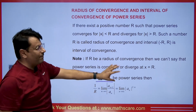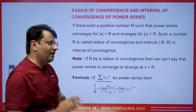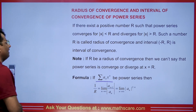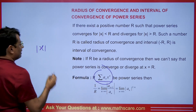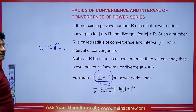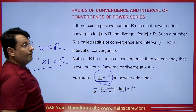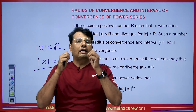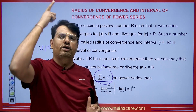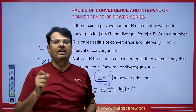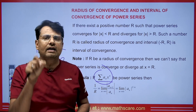Suppose we have a power series and we are getting its radius as R. This shows that the series will be convergent if |x| < R, and it will be divergent if |x| > R. But at |x| = R, we must check by substituting the value to find out if that infinite series is convergent or not at that particular point.